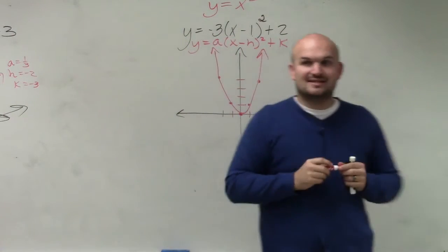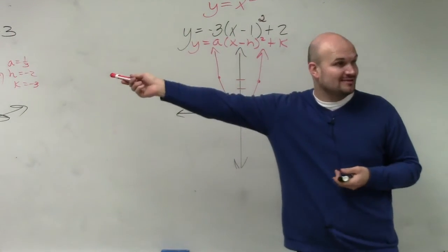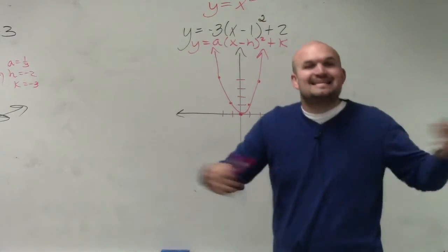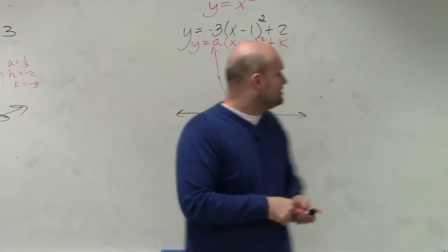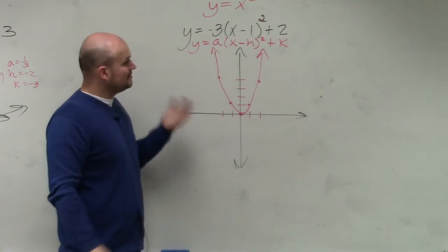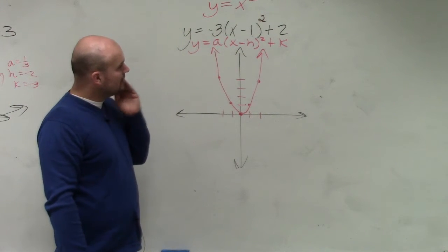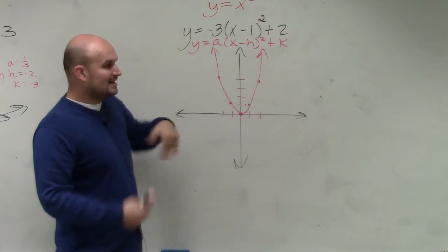Do you guys notice something that's kind of similar to something over there? The a, h, and the k represent the exact same thing. They're exactly the same. So we look at this and we say, all right, what is happening to my graph here? Well, first of all, and again,